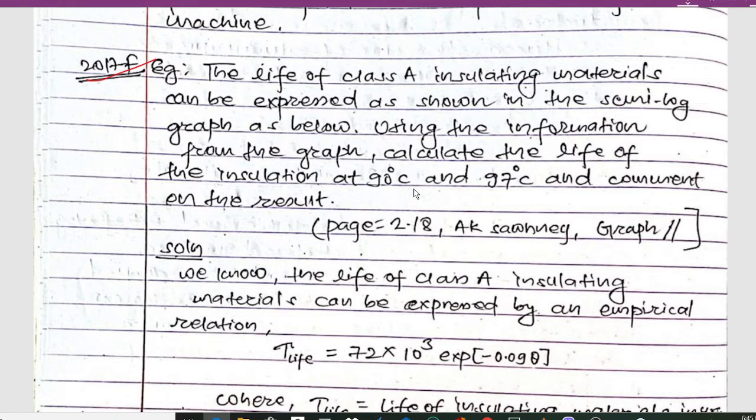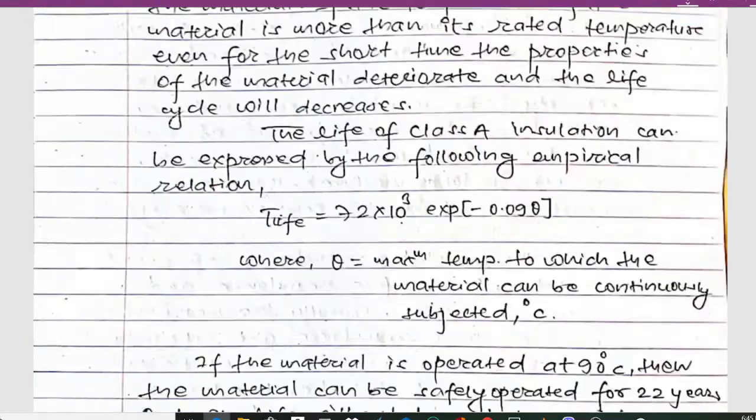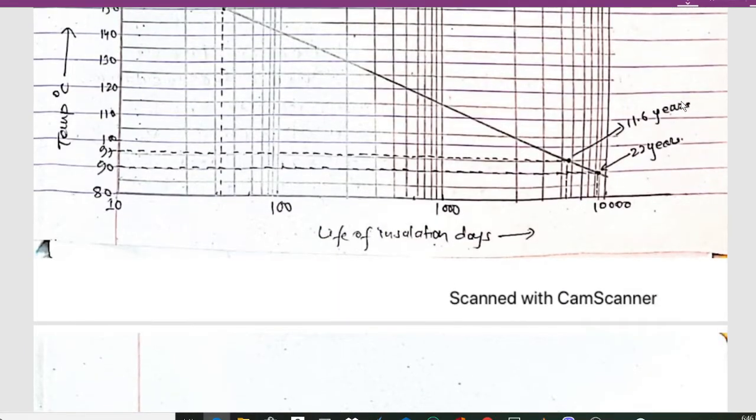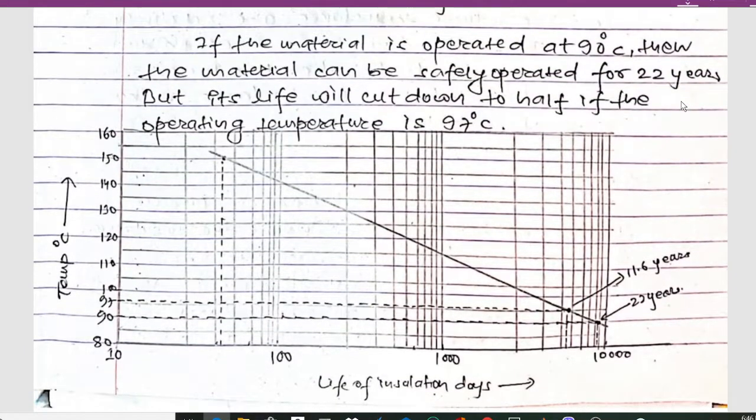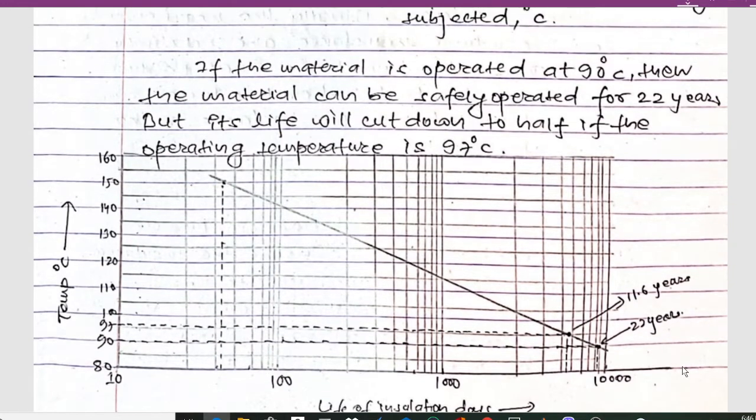Using the information from the graph, calculate the life of insulation at 90 degrees Celsius and 97 degrees Celsius and comment on the result. Here the graph is given, showing the respective temperature and the life of insulation.